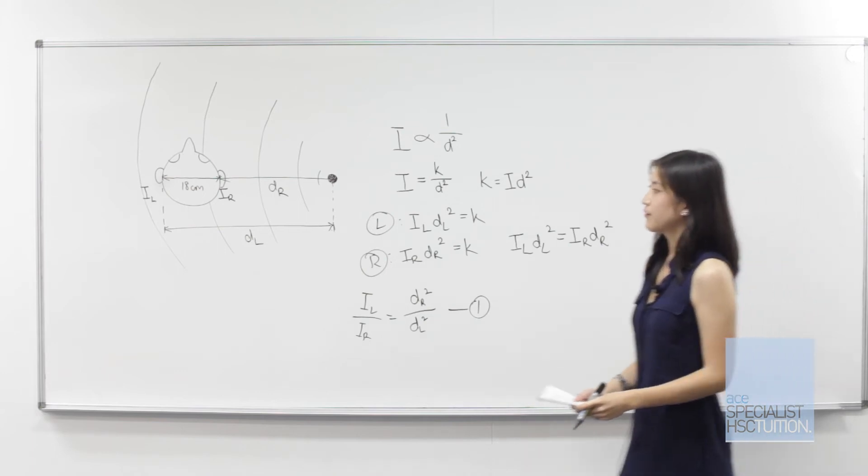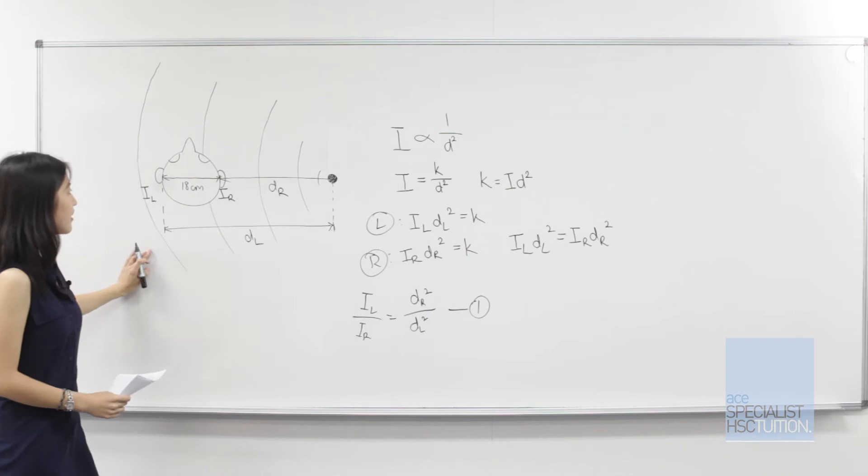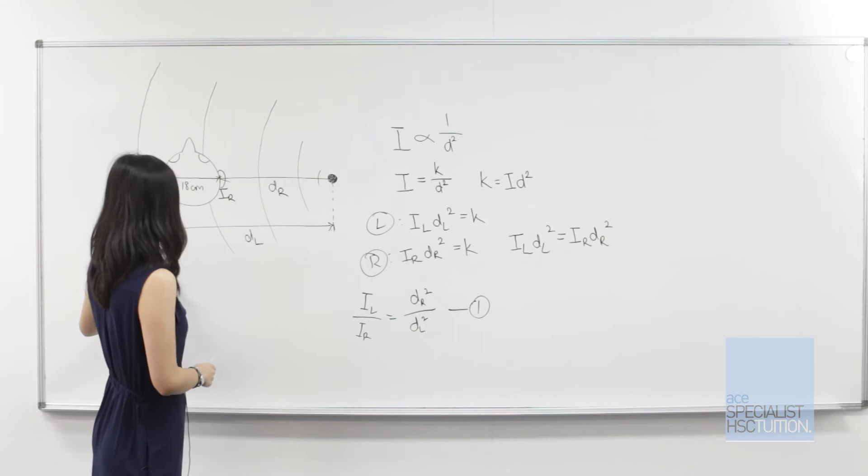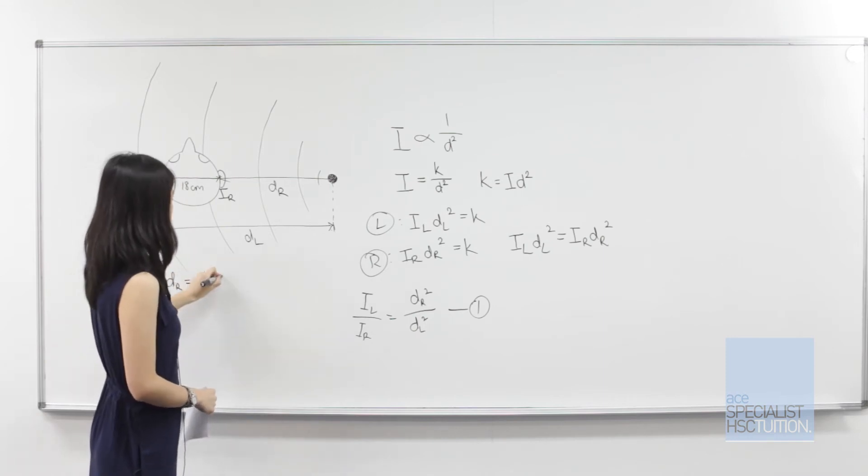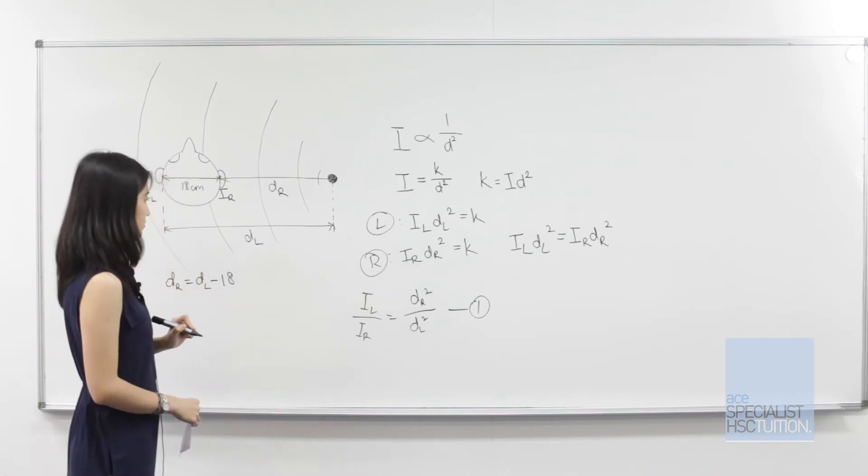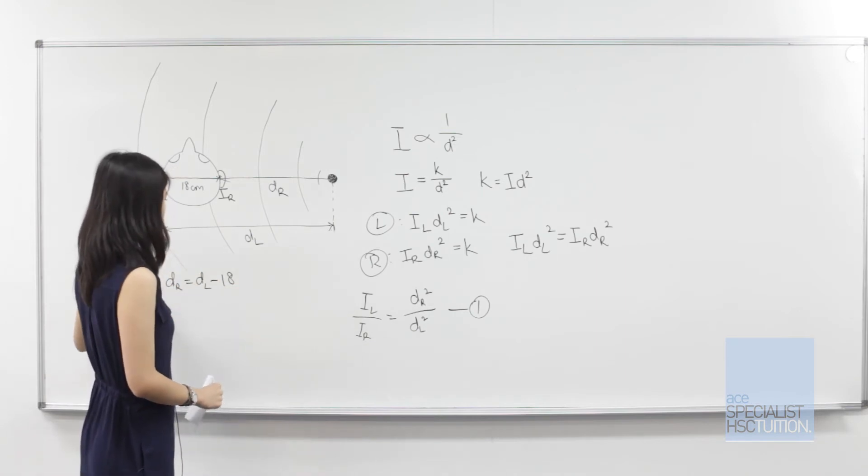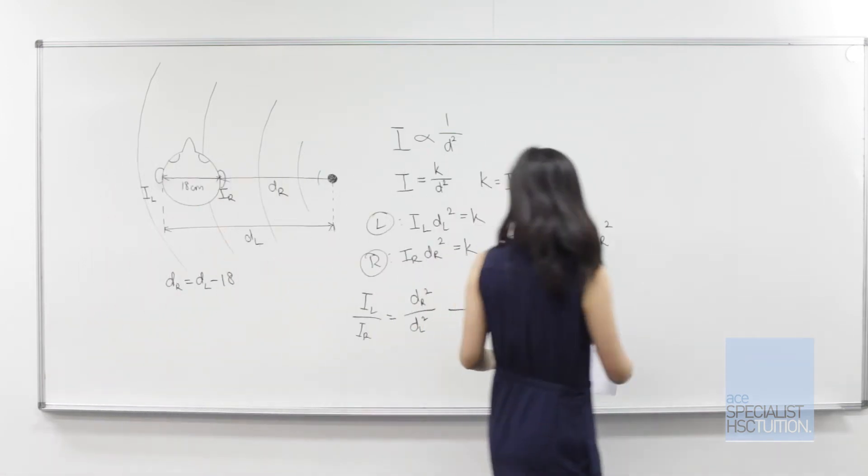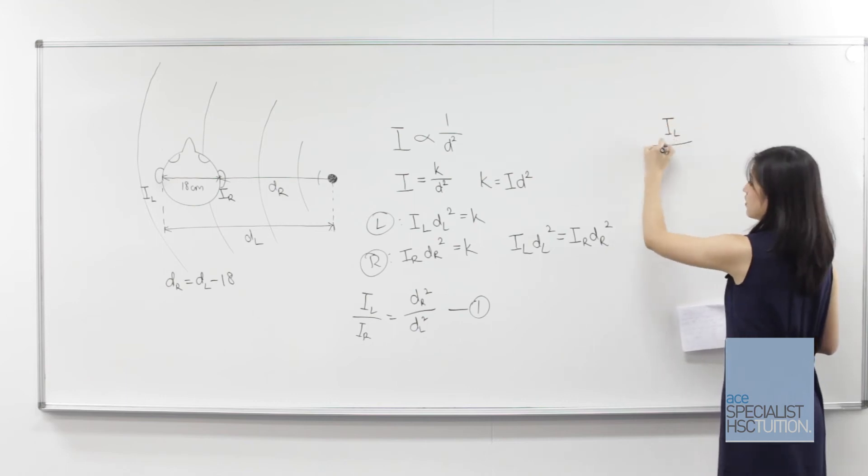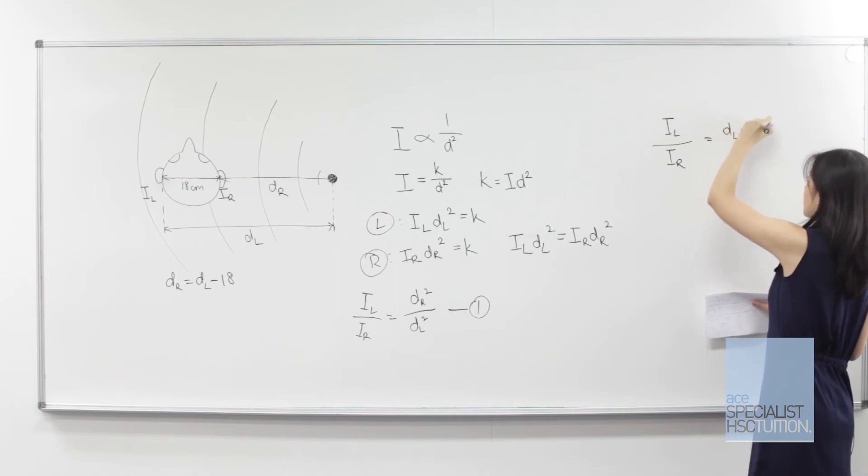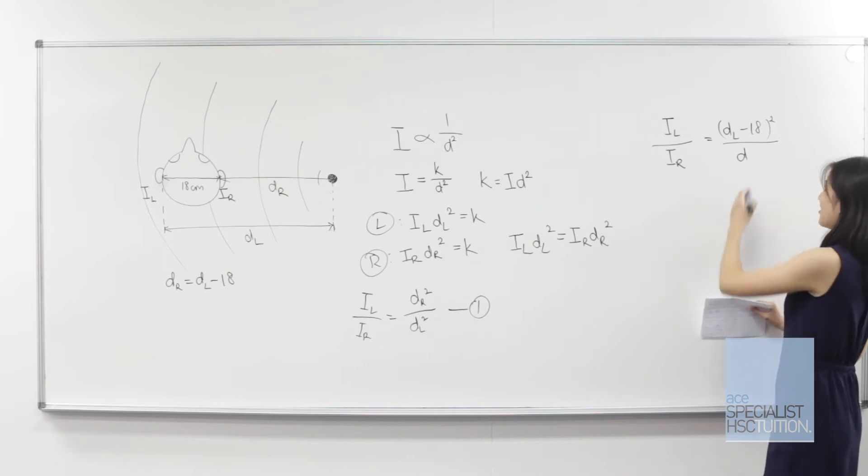From the question, we can see that the diameter of the head is 18 centimeters. So the distance to the right ear equals the distance to the left ear minus 18. Now we can insert this into equation one, so il over ir equals dl minus 18 squared over dl squared.